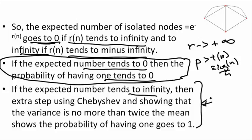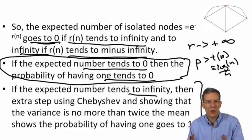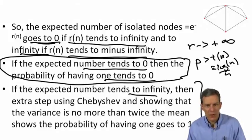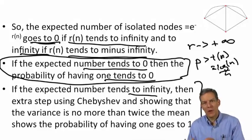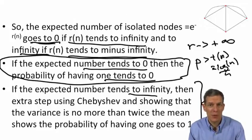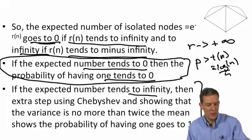Those threshold functions come from identifying where these expressions either go to one or to zero. Whether we're talking about isolated nodes or the first link appearing, it's going to be a different threshold. The proofs tend to have the same kind of structure, differing only in particular expressions depending on which property and threshold we're examining. This type of analysis underlies a lot of random graph theory. Now we're going to take a look at some other types of random network models and other kinds of things we might establish when using them.